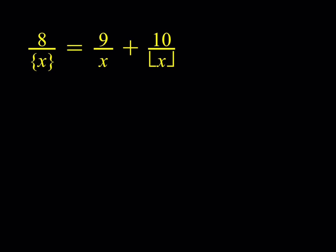So we have this equation where 8 is divided by the fractional part of x, which I'm going to define in a little bit. That is equal to 9 over x plus 10 divided by the floor value of x. We're going to solve for x values and start with the definition of floor value and the fractional part of x.